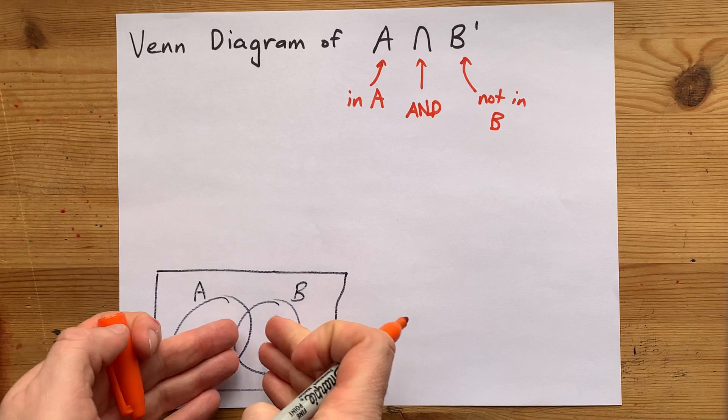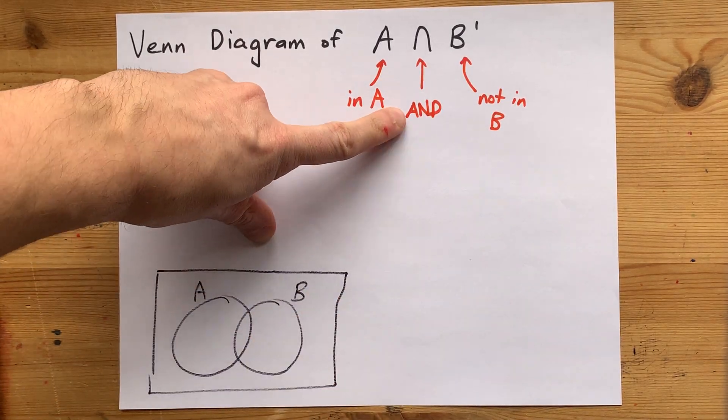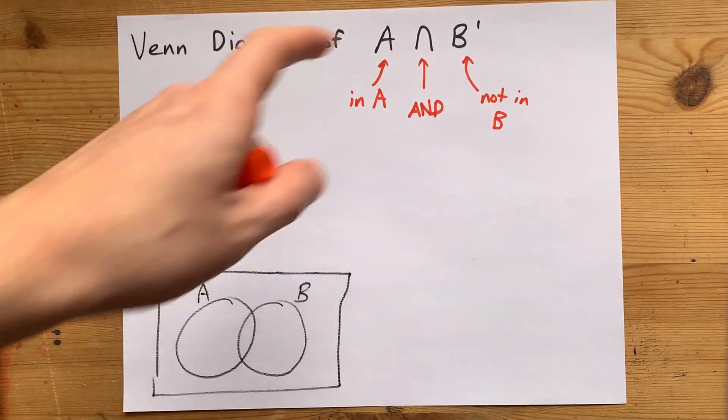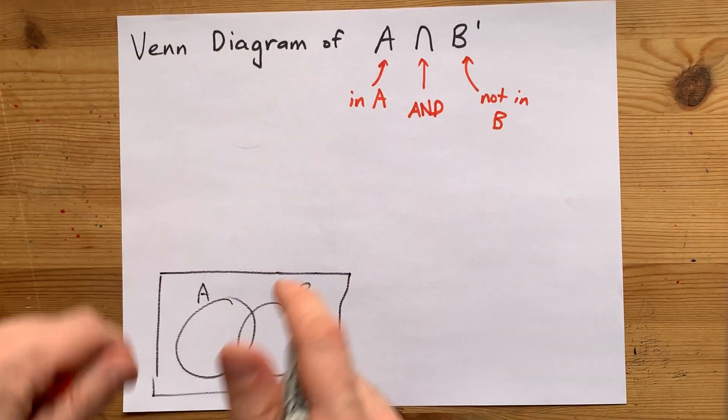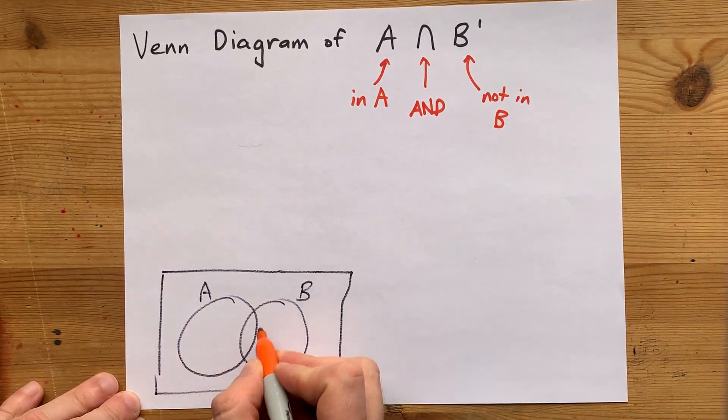So, we need to find the sections here that are inside of A and also are not in B. Well, the only sections that are inside A are inside this circle here.